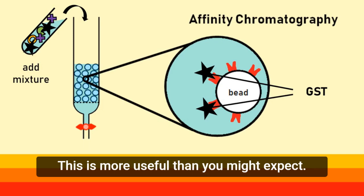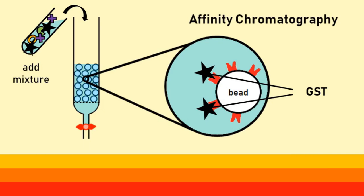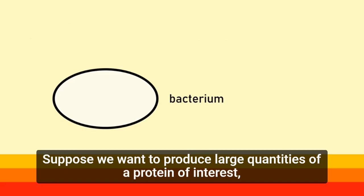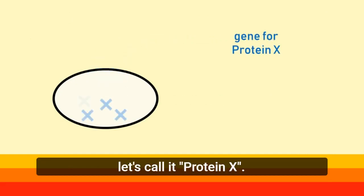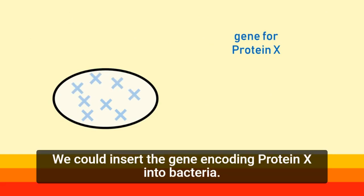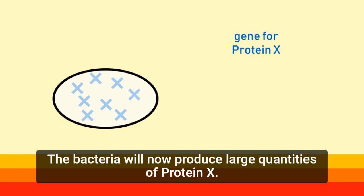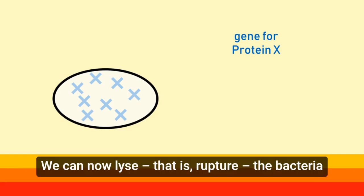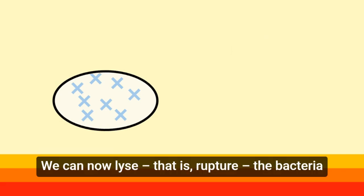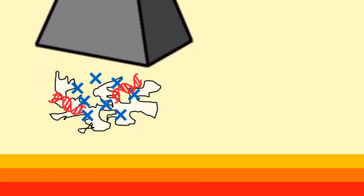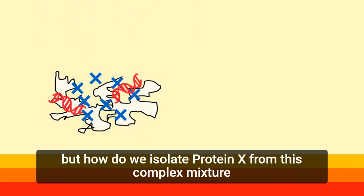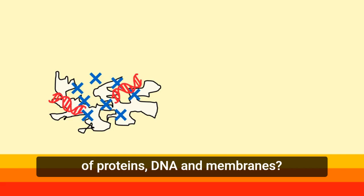This is more useful than you might expect. Suppose we want to produce large quantities of a protein of interest — let's call it protein X. We could insert the gene encoding protein X into bacteria. The bacteria will now produce large quantities of protein X. We can now lyse, i.e. rupture, the bacteria, but how do we isolate protein X from this complex mixture of proteins, DNA and membranes?